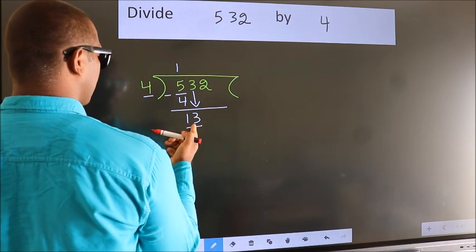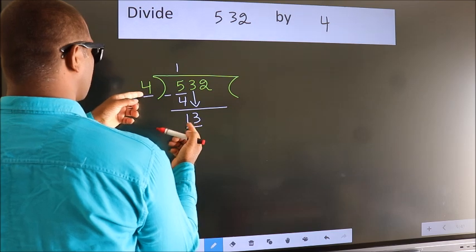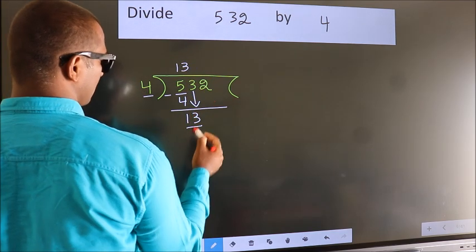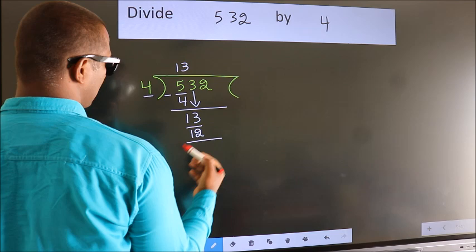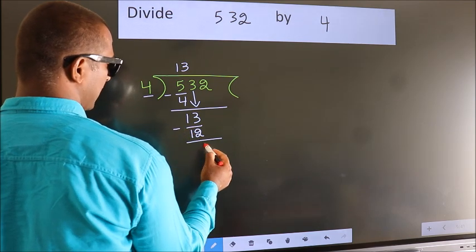A number close to 13 in 4 table is 4 threes, 12. Now we subtract. We get 1.